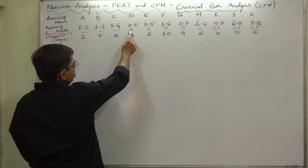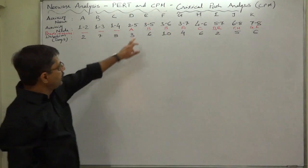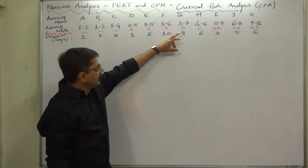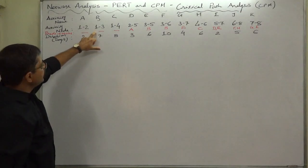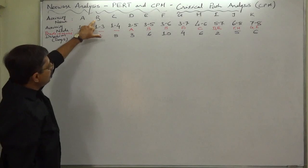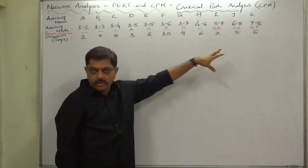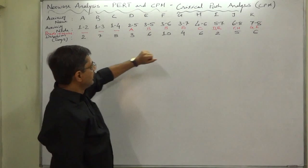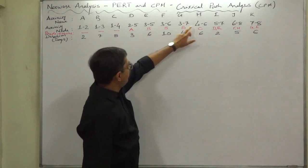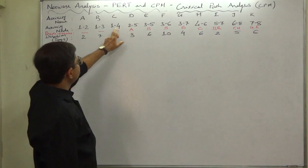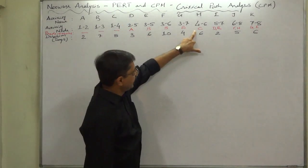A is predecessor of E, F and G. E, F and G all three start from node number three, and only B ends at node number three - that means B is the common predecessor of E, F and G. H starts from node number four, and only C ends at node number four - that means C is the predecessor of H.